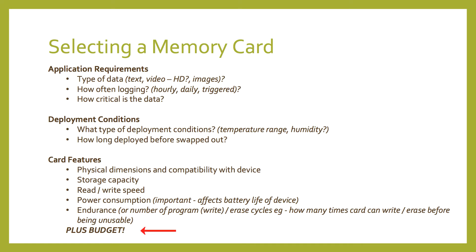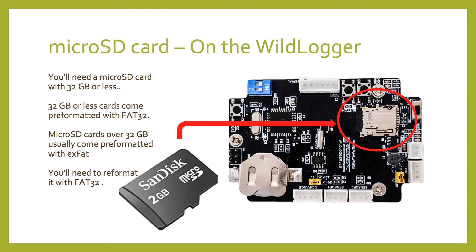From all these questions, we start to get an idea of the quality and card specs we'll need. For the Wild Logger, we'll need a micro SD card to fit the device. We'll be taking text data, probably set to take a reading every hour or few hours, or triggered by the PIR motion sensor. We don't need super fast read/write speeds, and we won't be operating below negative 25 degrees. So a cheapish micro SD card with 32GB or less should be fine. For bioacoustics or camera trapping, you'd probably want something with bigger storage capacity and faster read/write speeds.